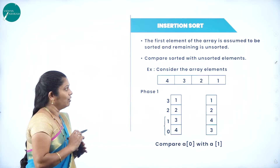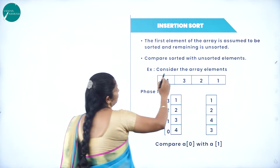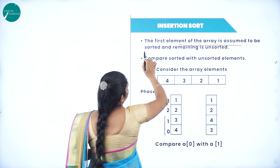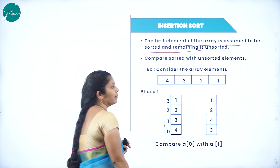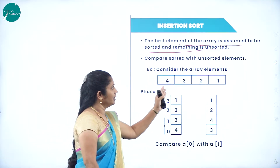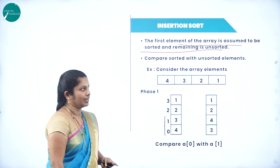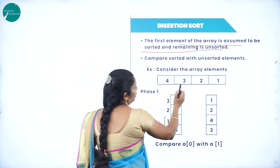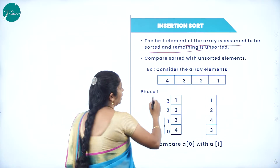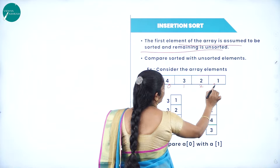Consider we have the array elements 4, 3, 2, 1. The first element of the array is assumed to be sorted and the remaining will be unsorted. The elements are in unsorted format with positions 0, 1, 2, and 3.